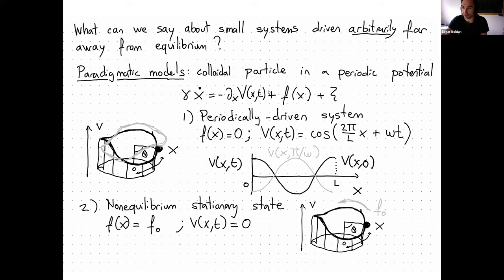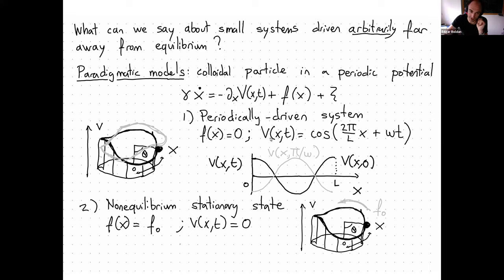I will use my own handwritten notes, so if you don't understand anything, please ask. The question is: what can we say about small systems arbitrarily far away from equilibrium? There are different paradigmatic models. One is, for instance, a particle in a potential where you modulate the potential as a function of time — like a periodic potential with period L where you change the phase as a function of time. This way you're doing work and the trajectories are also irreversible. Dissipation has been known for a long time as a signature of irreversibility.